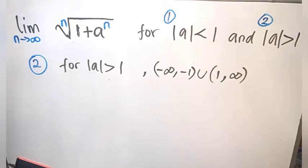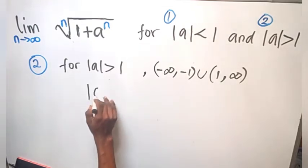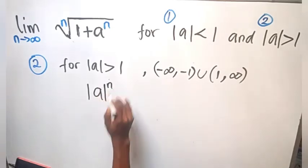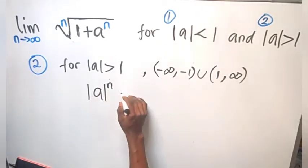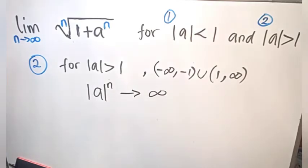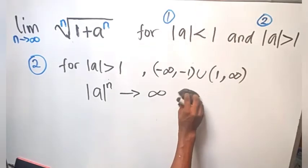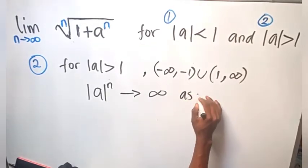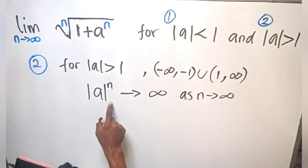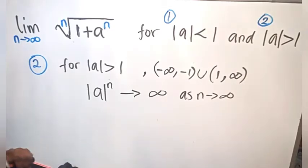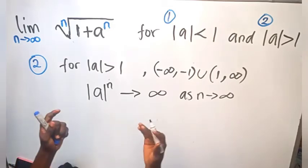For Case 2, it means that the absolute value of a raised to the power of n, as n gets larger, will also get larger. As n approaches infinity, this will also approach infinity because the absolute value of a is greater than 1 — when you raise it to some power, it becomes larger. Even for negative numbers, since we're taking the absolute value, it will also get larger.